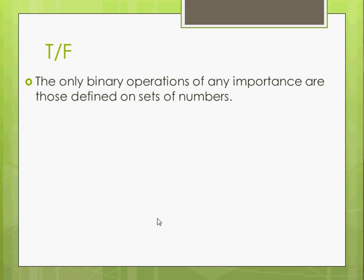So another true or false. The only binary operations of any importance are those defined on sets of numbers. Well, most of the time in math we deal with numbers but in modern algebra we don't, it's abstract. It's more abstract. So we're not necessarily talking about just numbers. We could be talking about shifts, permutations, these types of things. These are really a big topic in modern algebra. The symmetric groups is what this topic is called.